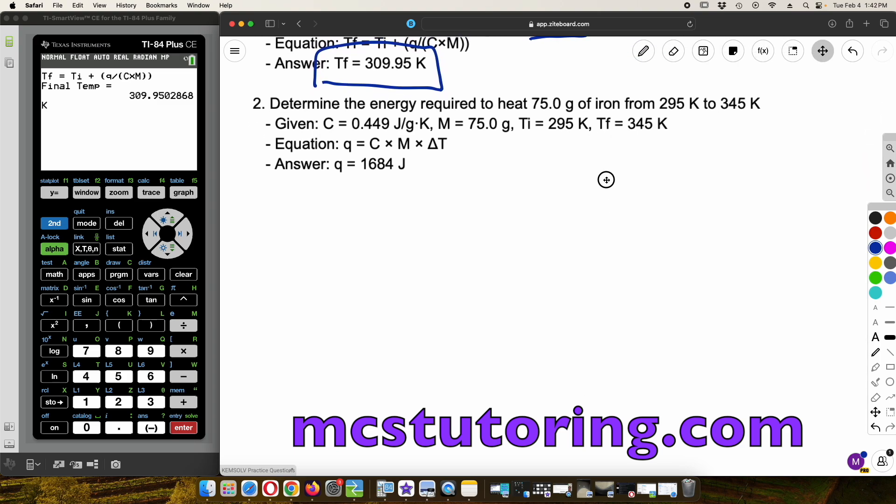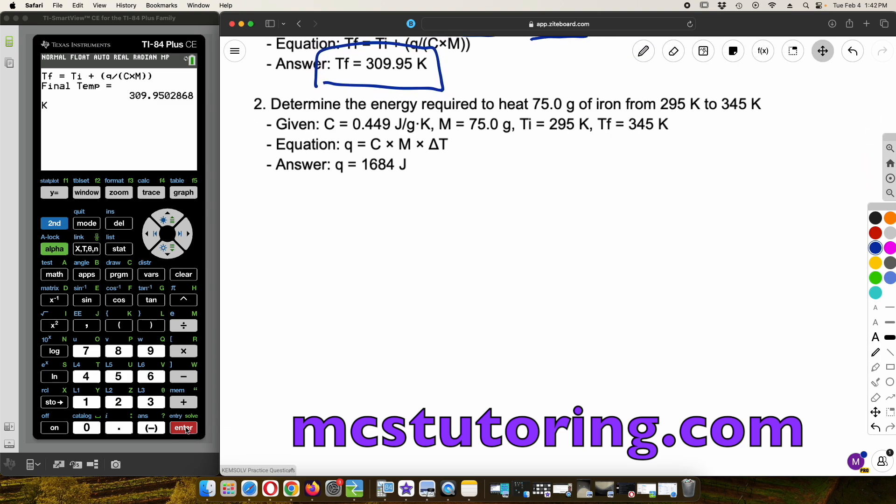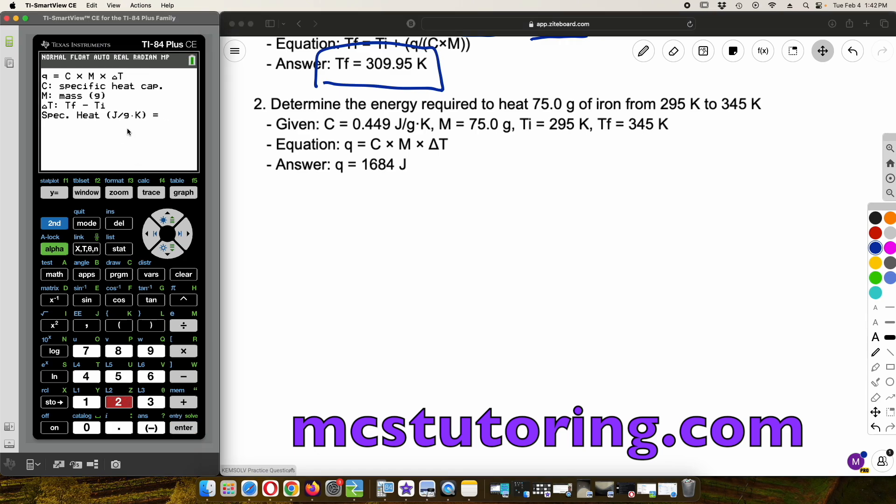One more problem. And I do want to show you the other parts of the program for thermochemistry in a moment. So now we want to find the energy required to heat 75 grams of iron from 295 K to 345 K. All right. So here we're going to find the energy. Fantastic. And what's the specific heat capacity? That's given as the C. That specific heat capacity for iron is 0.449. That's joules per gram degrees Kelvin. Or just Kelvin. Mass is 75.